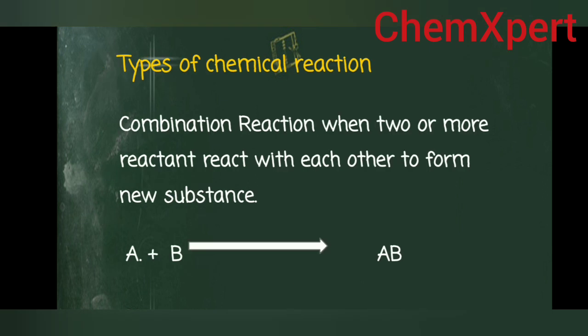Types of chemical reactions: there are four different types of reactions studied in this chapter. First is combination reaction — when two or more reactants react with each other to form a new substance, represented as: A + B → AB.